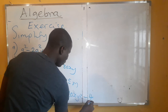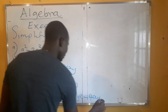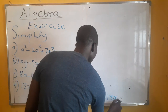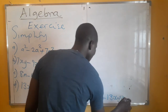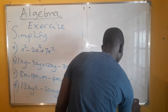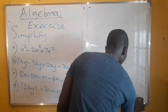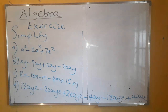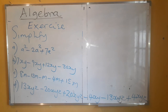And for part (d) continued: minus 4xyz, then minus 13xyz, then plus 4xyz. That is your exercise. Thank you.